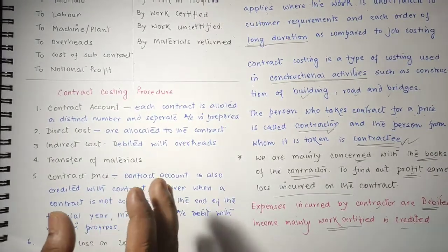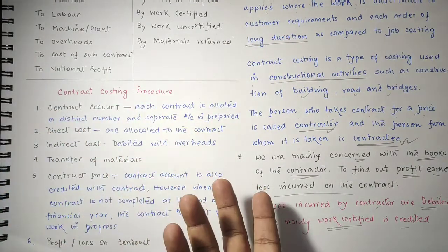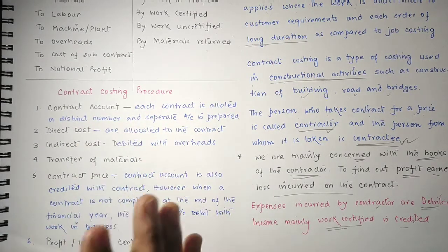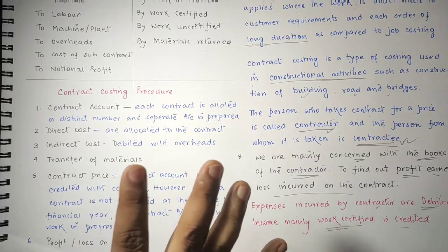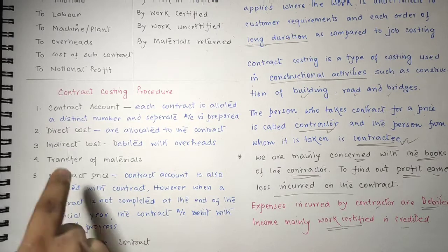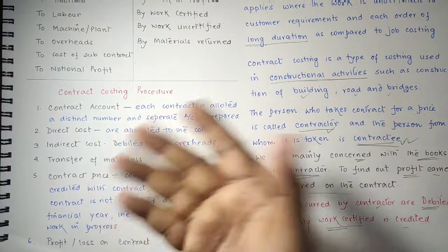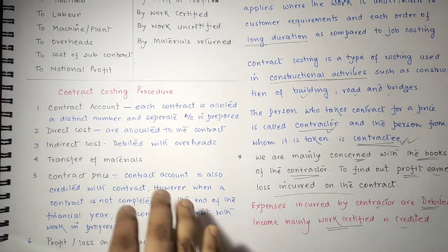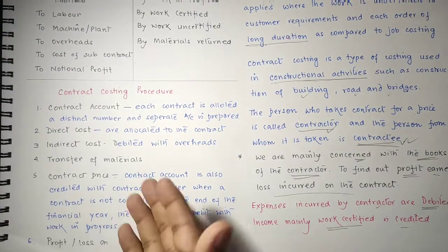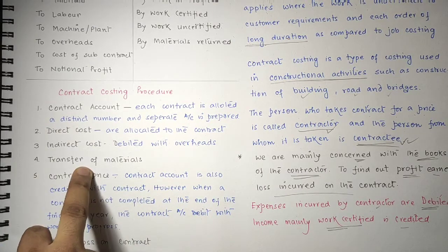Here is the costing procedure. First, we prepare a cost account with a distinct number and separate account for each contract. Second, all direct costs — material, labour, plant — are allocated to the contract. Third, indirect costs such as overheads are allocated to the contract costing. Then we handle the transfer of materials.